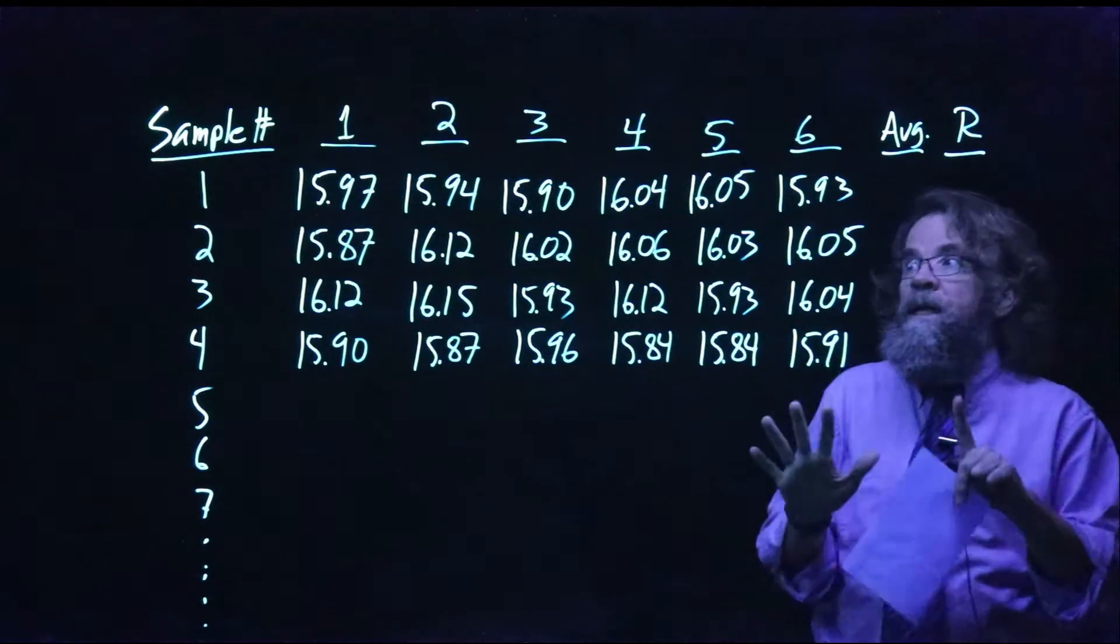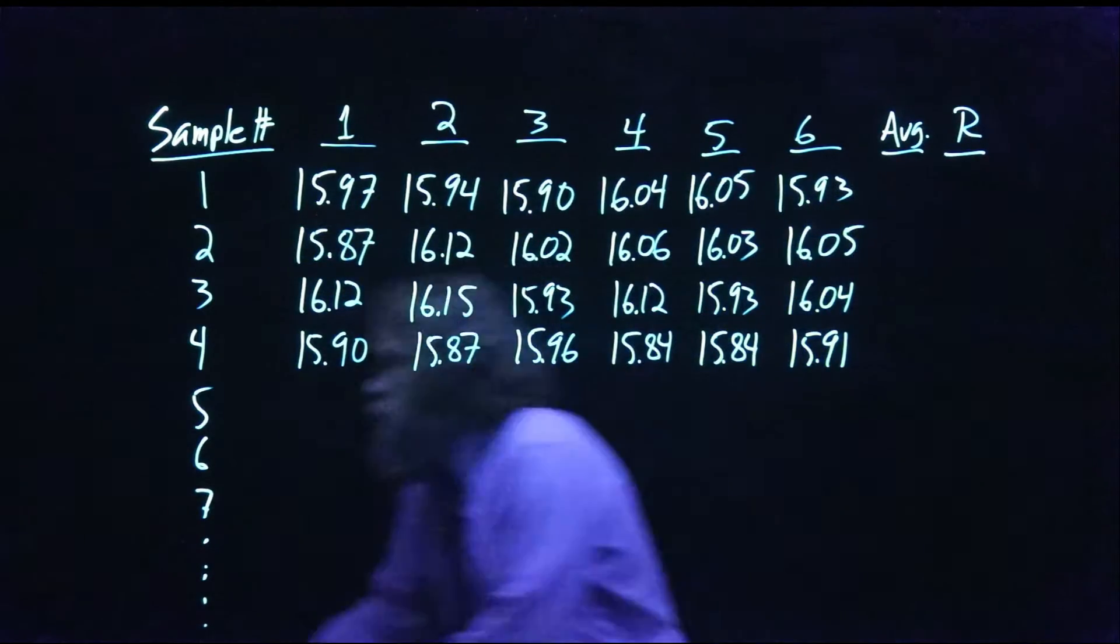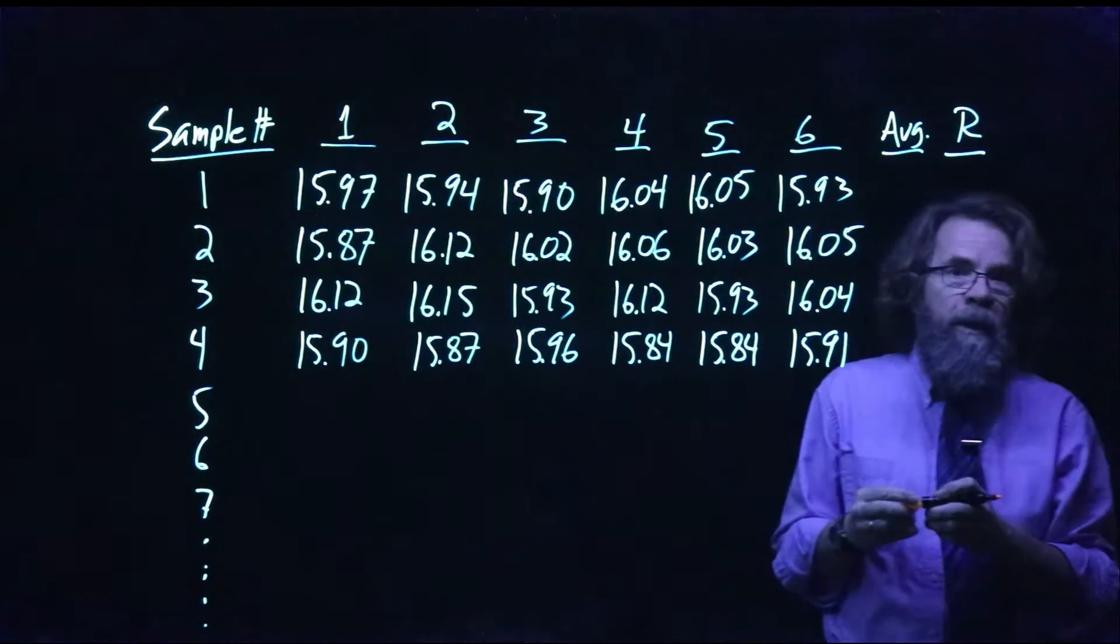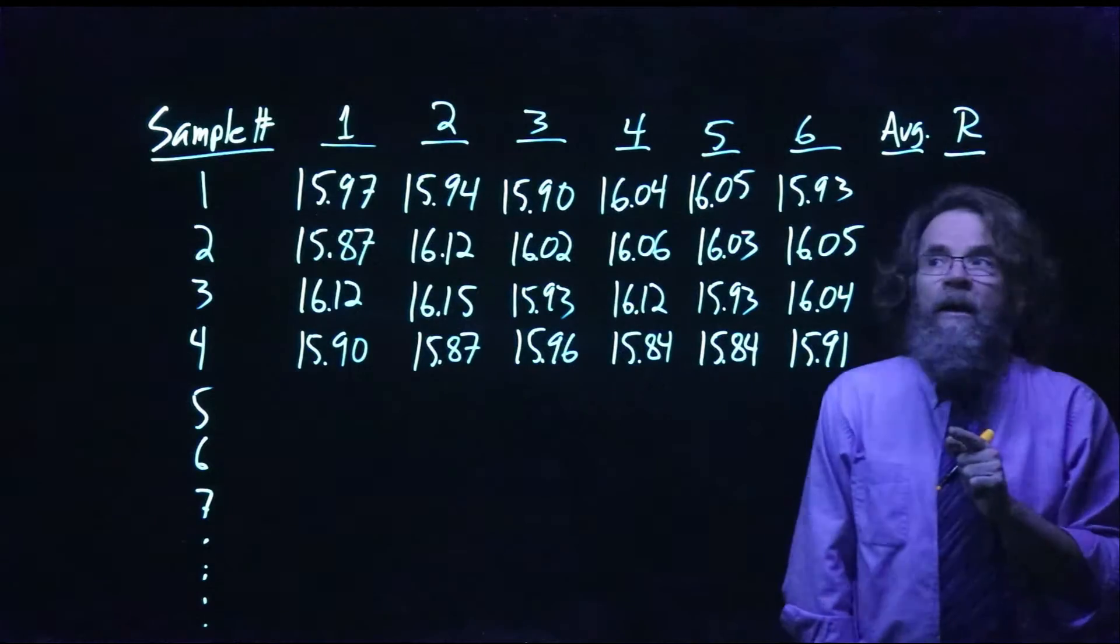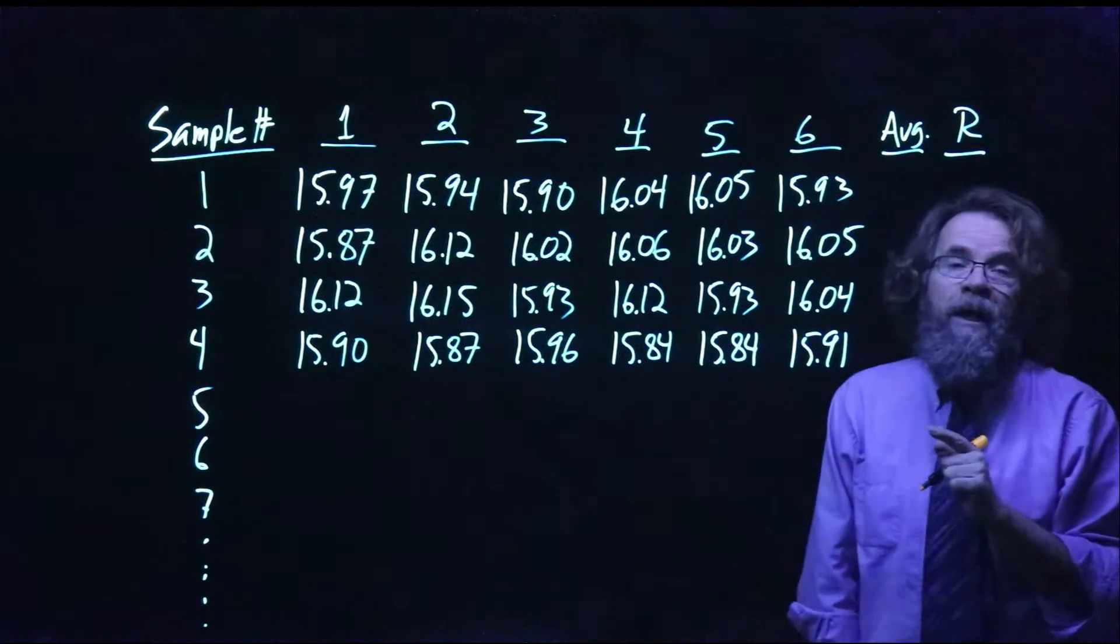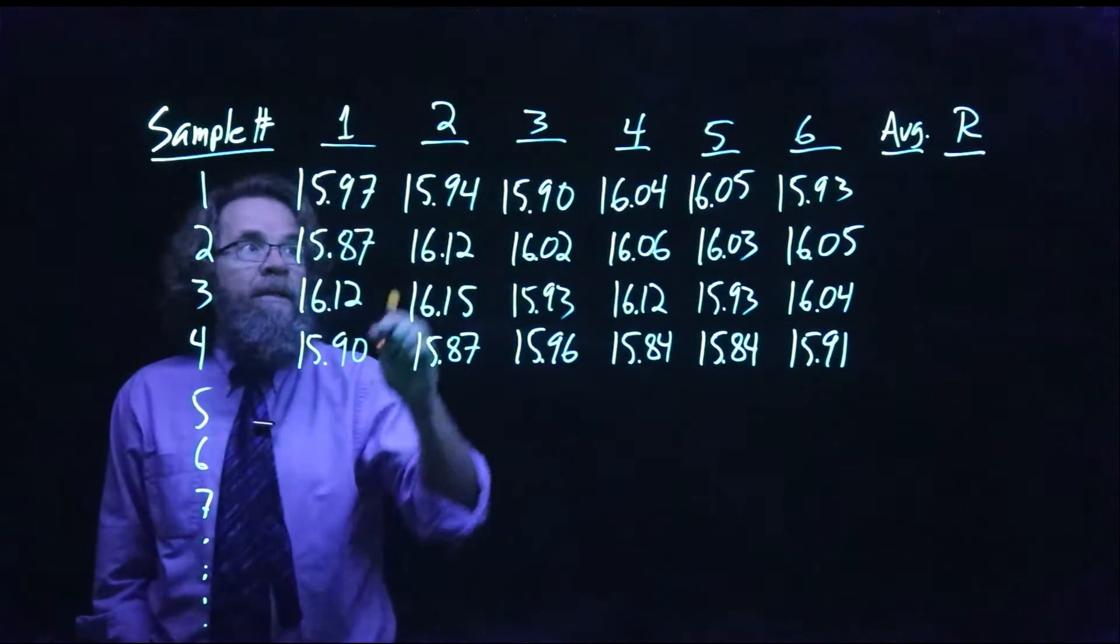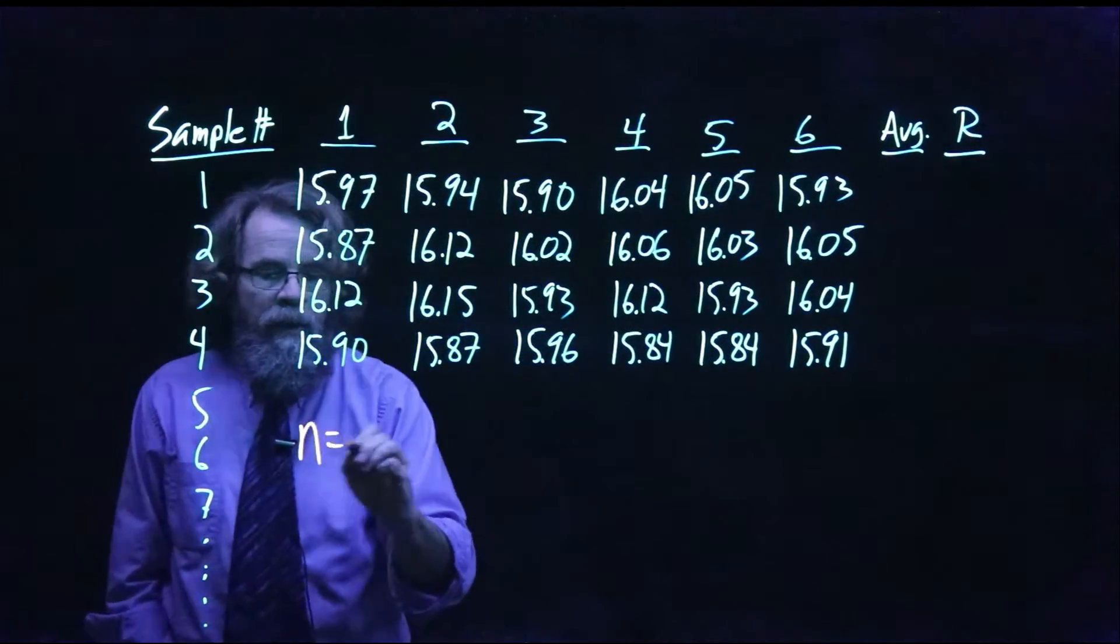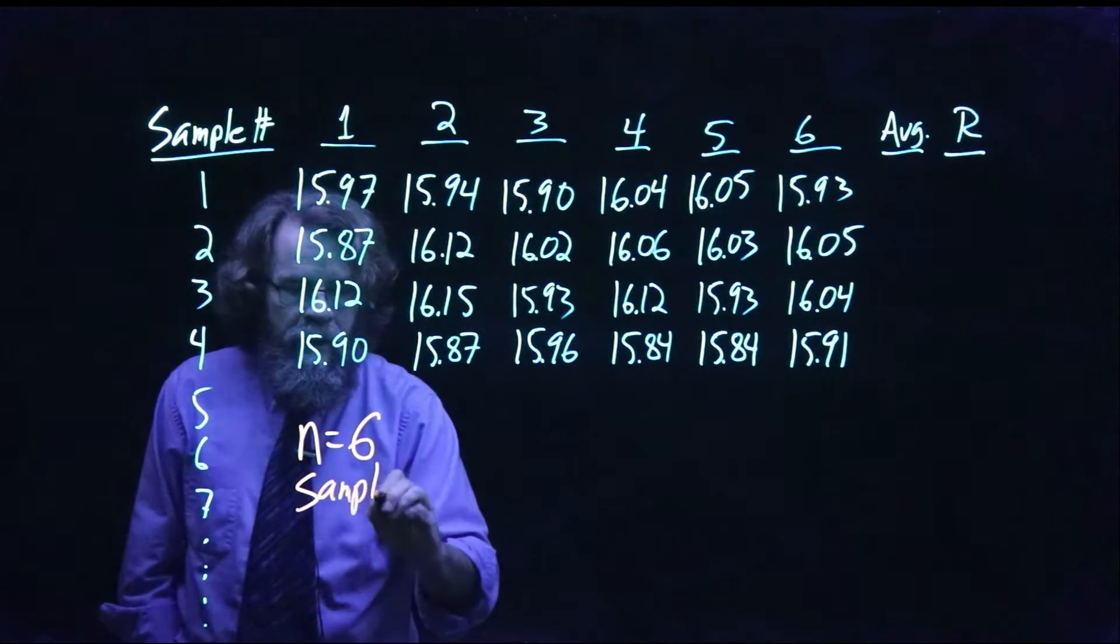And the important thing as far as calculating these control charts is the number of data points we collect each time—that is, how big the samples are. And so in this case, because we are collecting six pieces of information, we will say n equals six. That is our sample size.